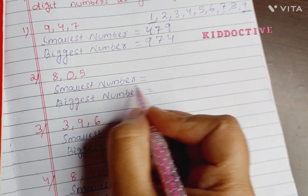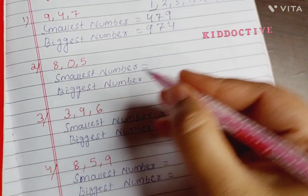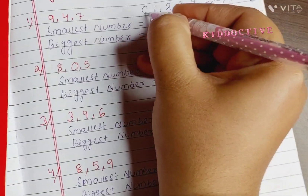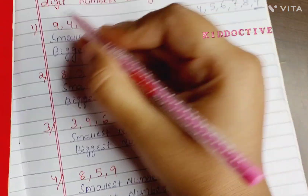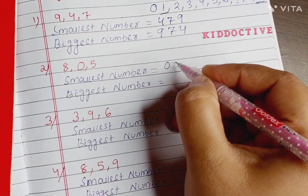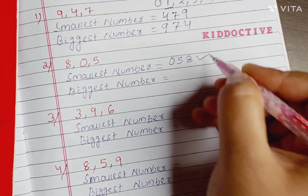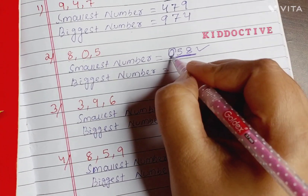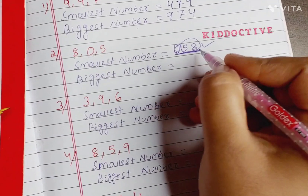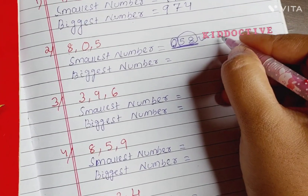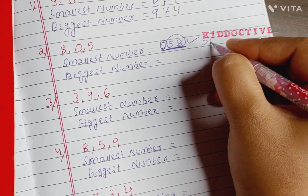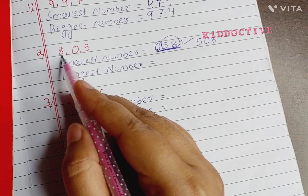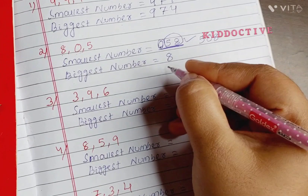Now the digits are 8, 0, and 5 — smallest three-digit number. When you see zero, zero comes before 1, but here it says three-digit number. If we write 058, it looks correct but it is not a three-digit number. If you write zero in the hundreds place, then this becomes a two-digit number, 58. So we have to write a three-digit number: 5, 0, 8 — so the smallest number is 508.